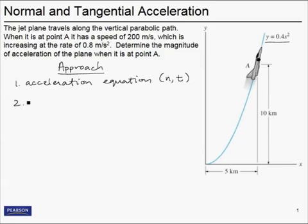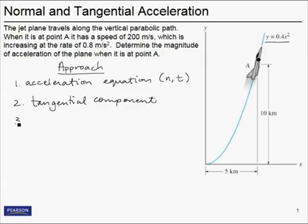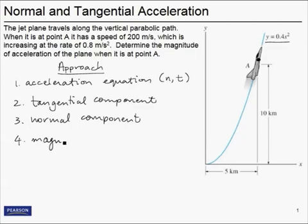Steps two and three are going to work together — one for the tangential component and one for the normal component. I'm going to do the tangential component first as step two, then the normal component as step three. Finally, once we have those two components, we can go ahead in step four and find the magnitude, which will be the square root of the sum of the squares of the normal and tangential components.